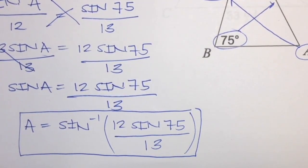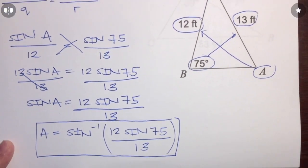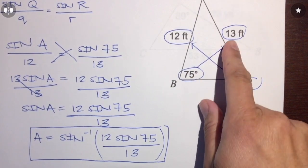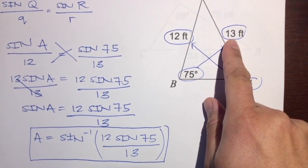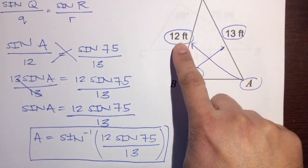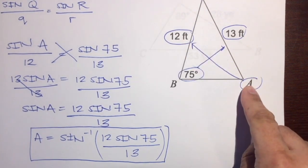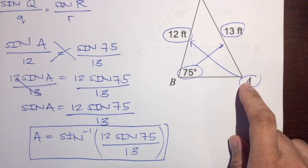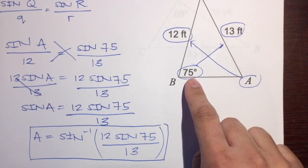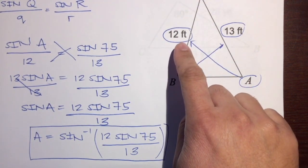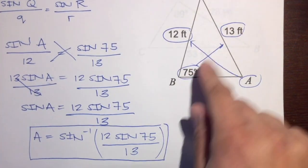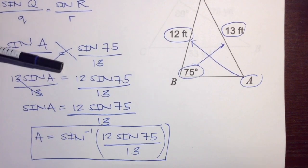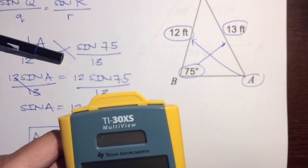Now let's get the numeric answer. Looking at this, let's make a prediction: the 75 degrees has opposite side 13, and 13 is greater than 12. So angle A should be less than 75 degrees because its opposite side is smaller than 75's opposite side. That's my prediction. Let's use our calculators.